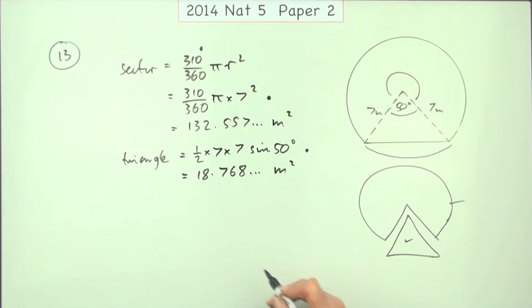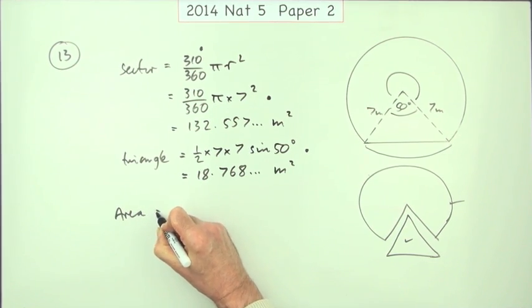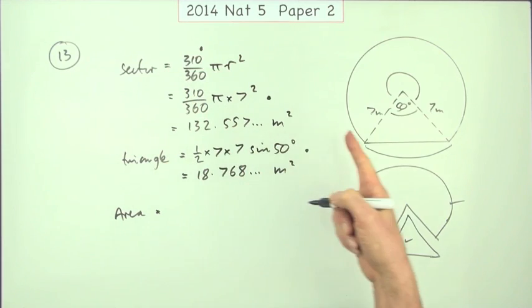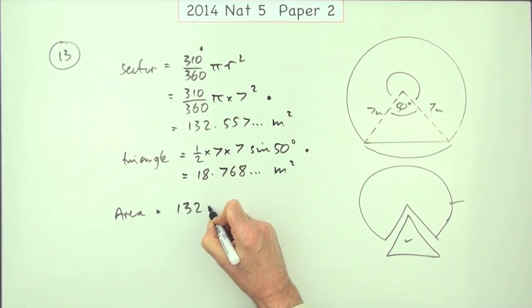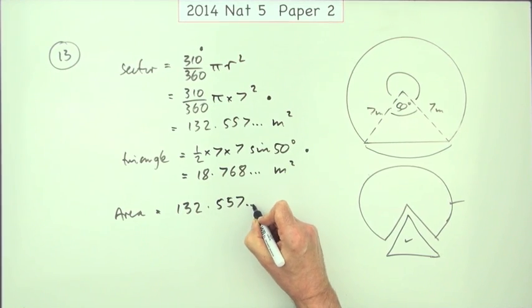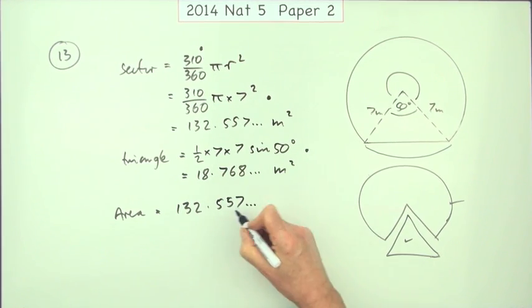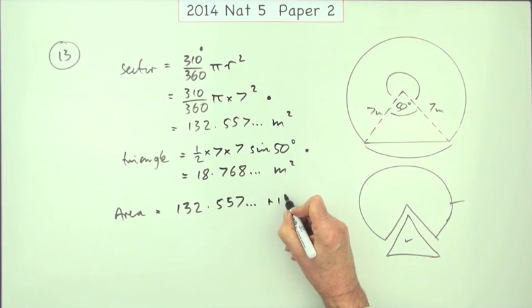Now comes the part: what's the area they're looking for? Well, it's going to be the sector plus the triangle doing it that way. So it's going to be 132.557, again the nuisance of the floating decimals, plus 18.768 and so on.